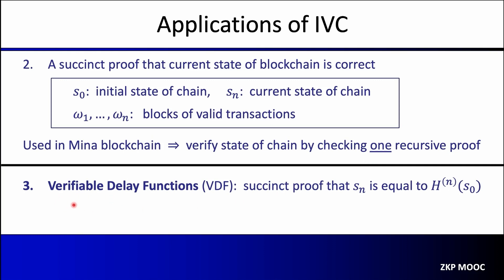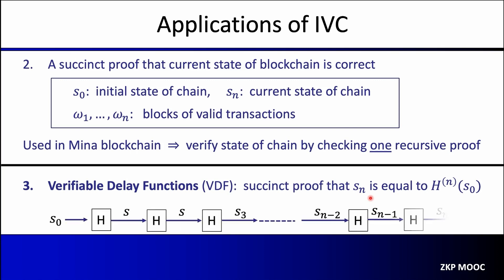Another application is a verifiable delay function, where the goal is to compute a function in a way that can't be sped up by parallelism — a sequential computation — but once you have the final answer, it's easy to convince someone else that S_n is correct. We use a hash chain: starting from S0, applying the hash over and over we get S_n — denoted H^n(S0). The IVC proof proves S_n is correct using a short proof that's fast to verify, allowing the prover to do this one step at a time without huge memory requirements.